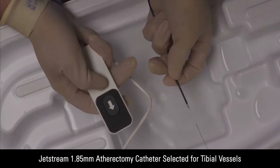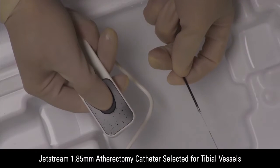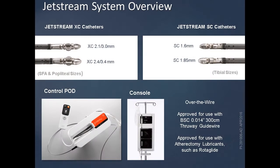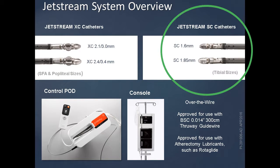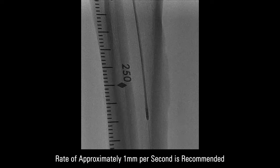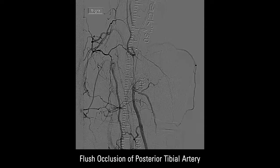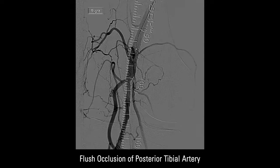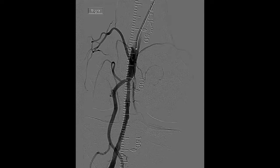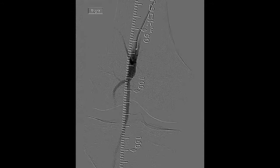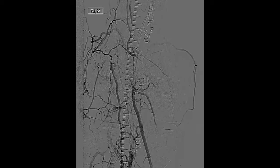The next step is to proceed with aspirational atherectomy from the peroneal artery. At this point we are using the smaller 1.85 mm device. The major difference between the above-the-knee and below-the-knee devices is there is no blades-up modality, and it's only one size for aspiration. We're performing aspirational atherectomy from the mid-peroneal artery. You can see the flush occlusion of the posterior tibial artery. That branch visible in the beginning is one of the genicular branches, not the posterior tibial artery. We have established flow to the peroneal artery, but we need to establish flow to the posterior tibial artery without compromising the work done here.